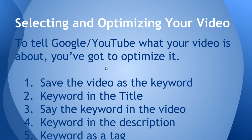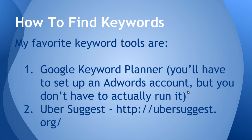Once you have found the keyword that you want your video to be about, you're going to optimize your video. Essentially what you're doing is telling Google or YouTube what your video is about. The way that you do that is by following these five steps: save the video as the keyword, put the keyword in the title, say the keyword in the video — Google's technology is getting better at voice recognition — put the keyword in the description, and use the keyword as a tag.